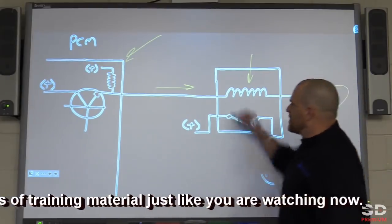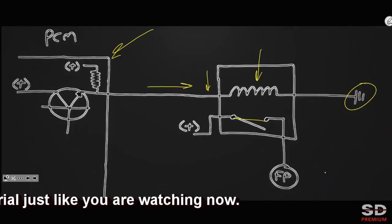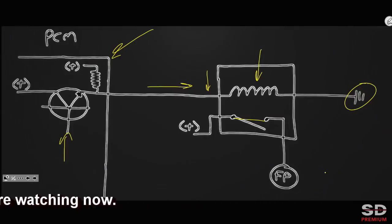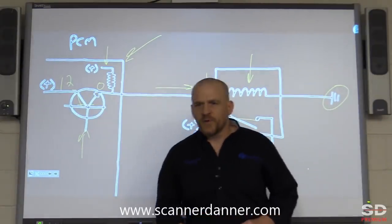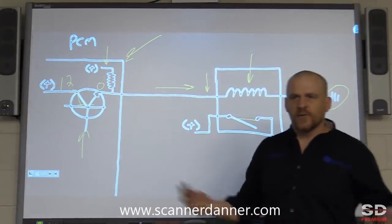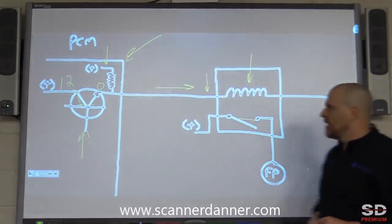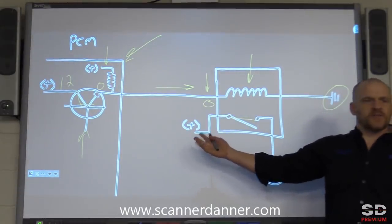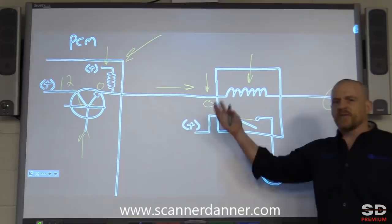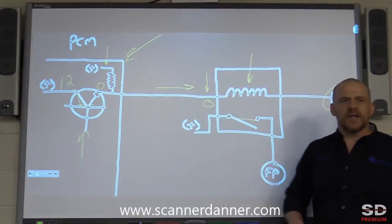What would the voltage be in this circuit with the transistor off? With that base circuit being turned off, we'd have 12 volts here — it would not extend through, it would be blocked — so we'd have zero on this side. Would everyone agree that would be zero volts? If there's zero there, the fuel pump's not running. If there's zero there, the magnetic field's not being energized.